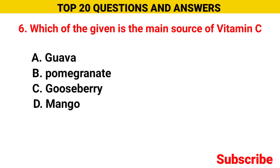Which of the given is the main source of vitamin C? Option A guava, option B pomegranate, option C gooseberry, option D mango. The correct option is option C, gooseberry.